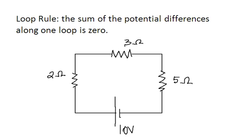The second rule is the loop rule, and that the sum of the potential differences along one complete loop is zero. So what I've done here to kind of show that is this circuit here. We've got a battery and we have three resistors, and so that's one complete loop all the way around. This is super simple but just to get the idea across.